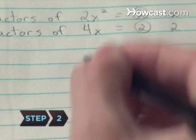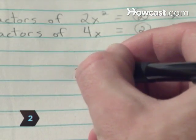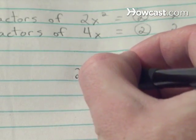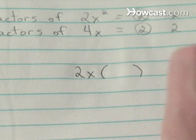Step 2: Remove the largest common factors shared by each term, 2 and x, and place them outside a set of empty parentheses.